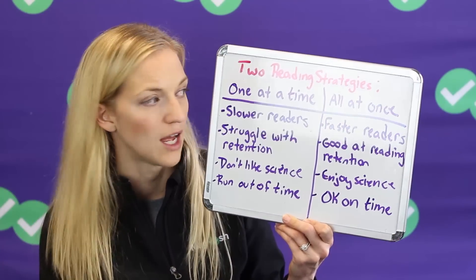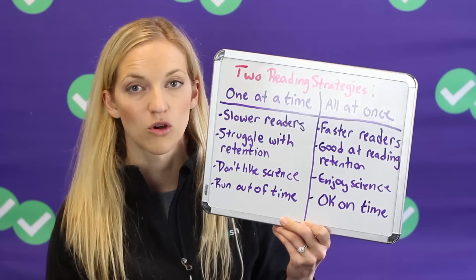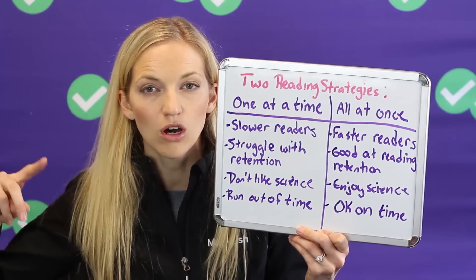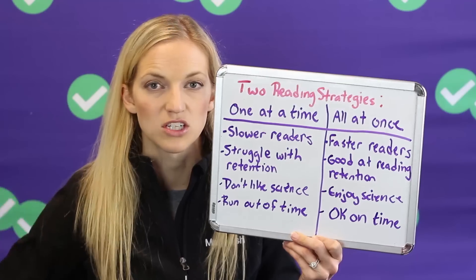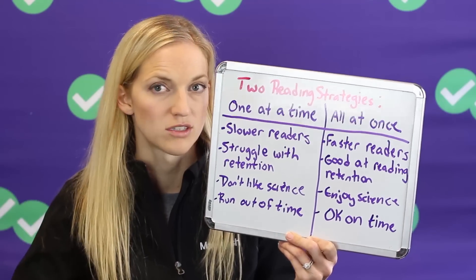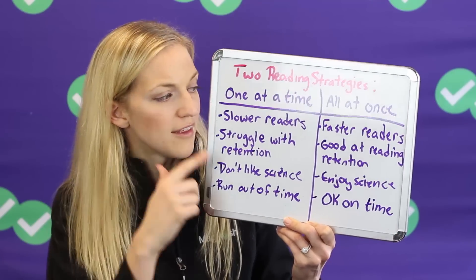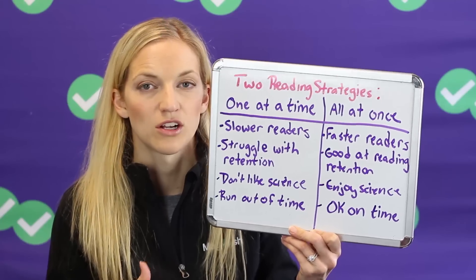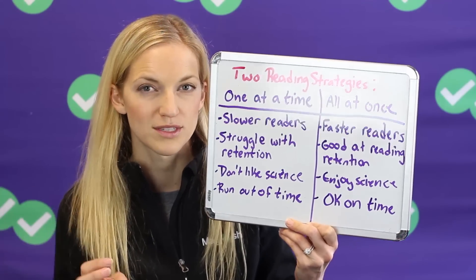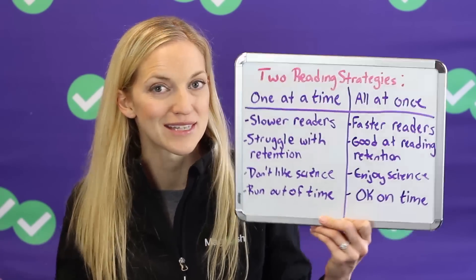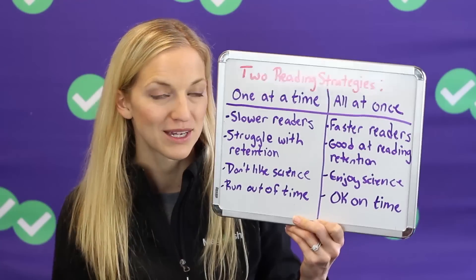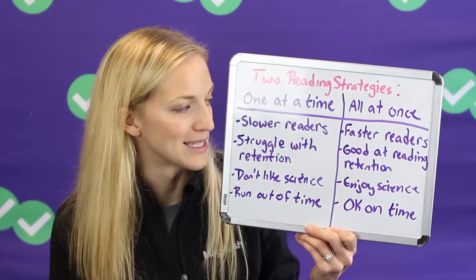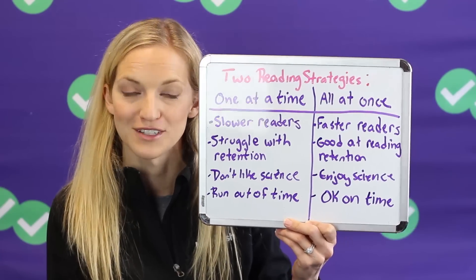If you're fast, you love science, and you're doing fine on time, maybe you want to read them all at once and do all the questions. Reading one at a time means reading the first perspective and then going to find the questions that just deal with that one. There are going to be some questions on the first, some on the second, some on both. Do that, then read the second one, answer the questions on that, and then answer the questions that cover all of them. This really helps you focus and avoid picking distracting answer choices from a different perspective.